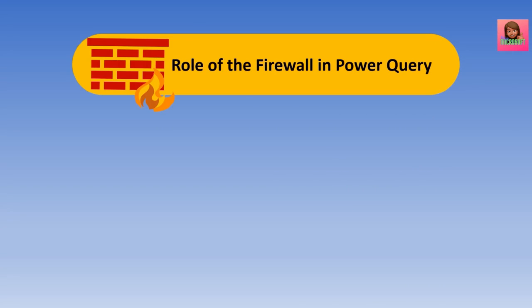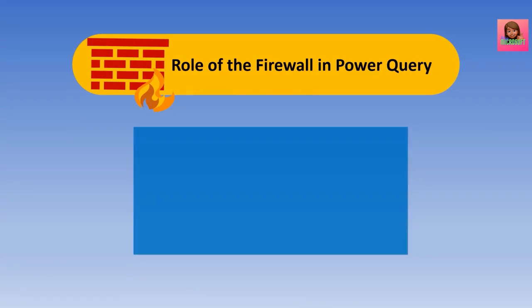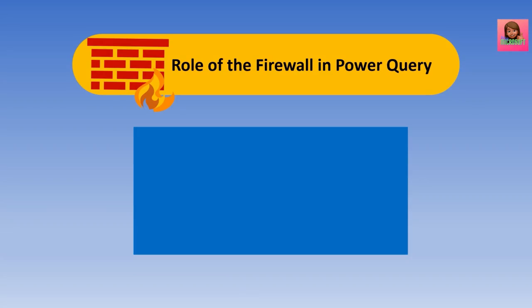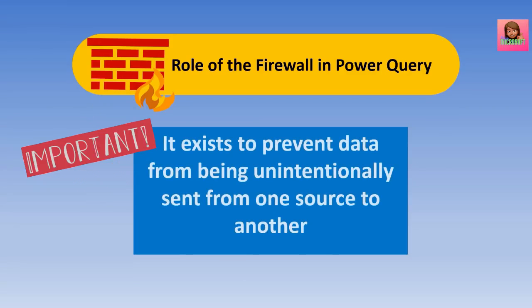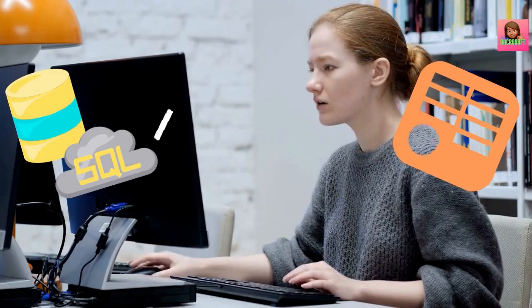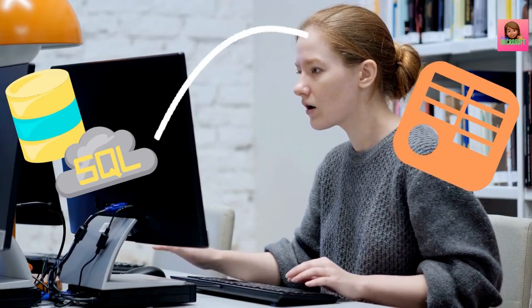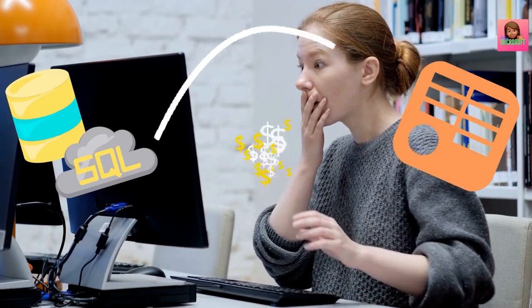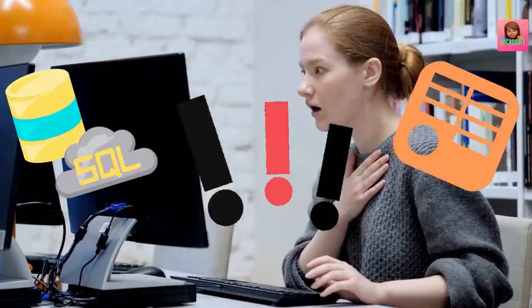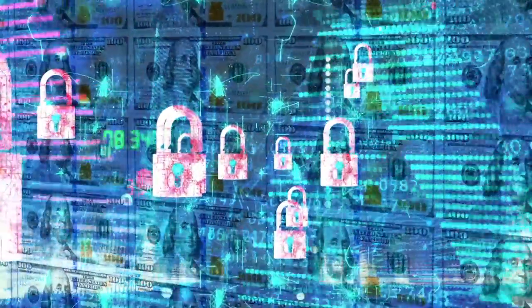Let's take a look at the role of the firewall in Power Query. If you want to skip ahead to the solution, check out the timestamps below — but I'd suggest sticking around, as it will give you a much better understanding and help you advance your Power Query skills. The firewall serves an important purpose: it exists to prevent data from being unintentionally sent from one source to another. For example, imagine you were joining SQL data containing employee salaries with results from an external OData feed, and discovered that salaries were being sent to the OData service. This is exactly the kind of scenario the data privacy firewall is intended to prevent.